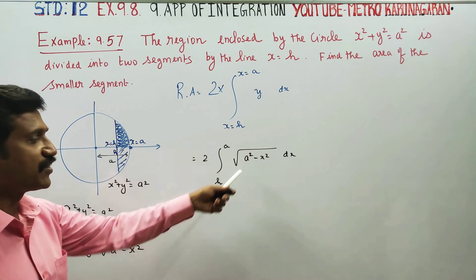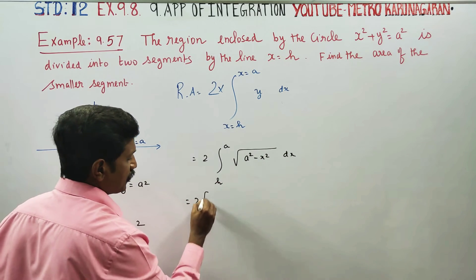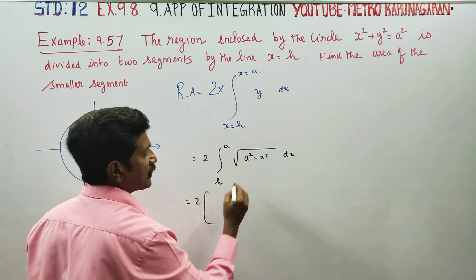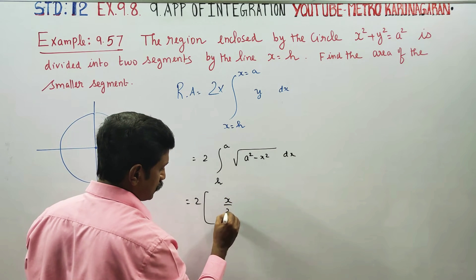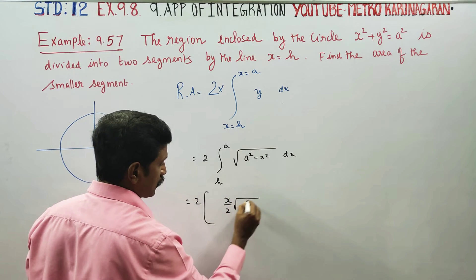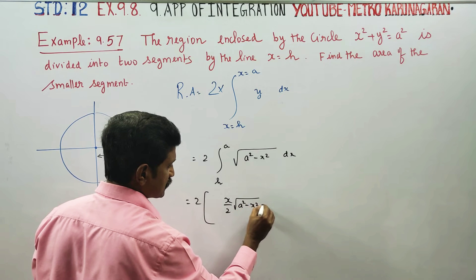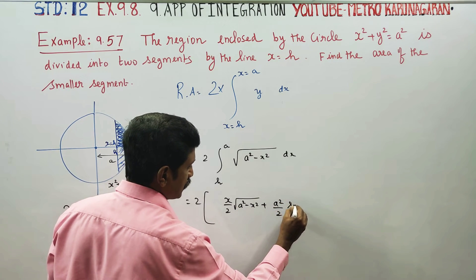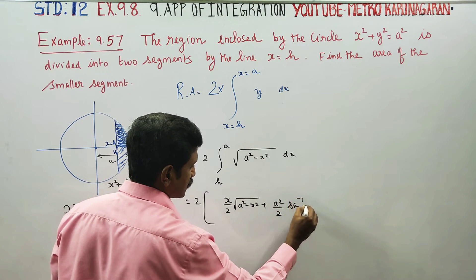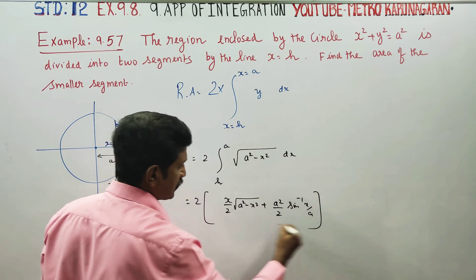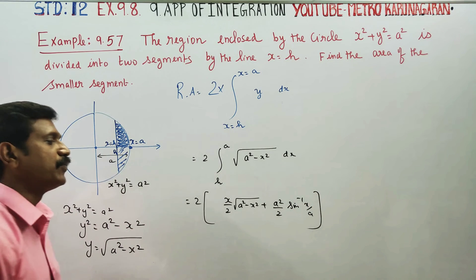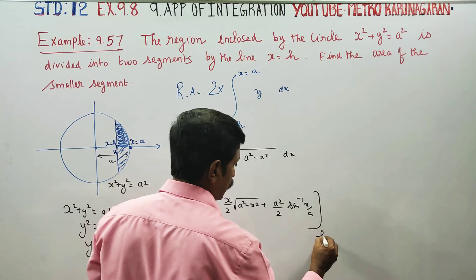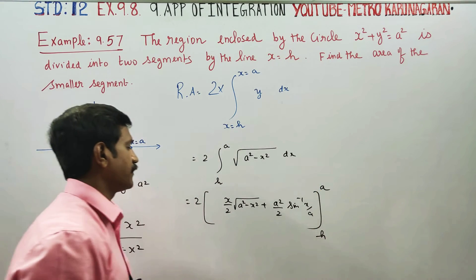The integration is a ready-made formula. The formula for √(a² − x²) is: (x/2)√(a² − x²) + (a²/2) sin⁻¹(x/a). This is the ready-made formula. The limits are lower limit h and upper limit a.